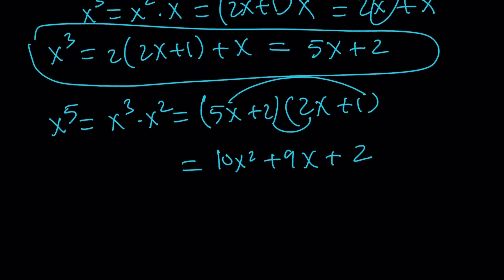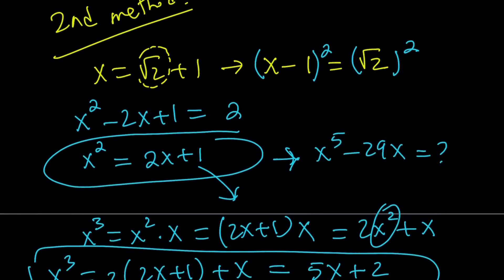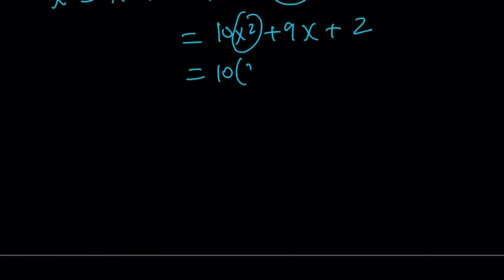And then you can basically replace x^2 with 2x + 1, right? All the time. You can do that because they are equivalent. And then if you go ahead and simplify this, you're going to get 29x + 12. But that is x^5.